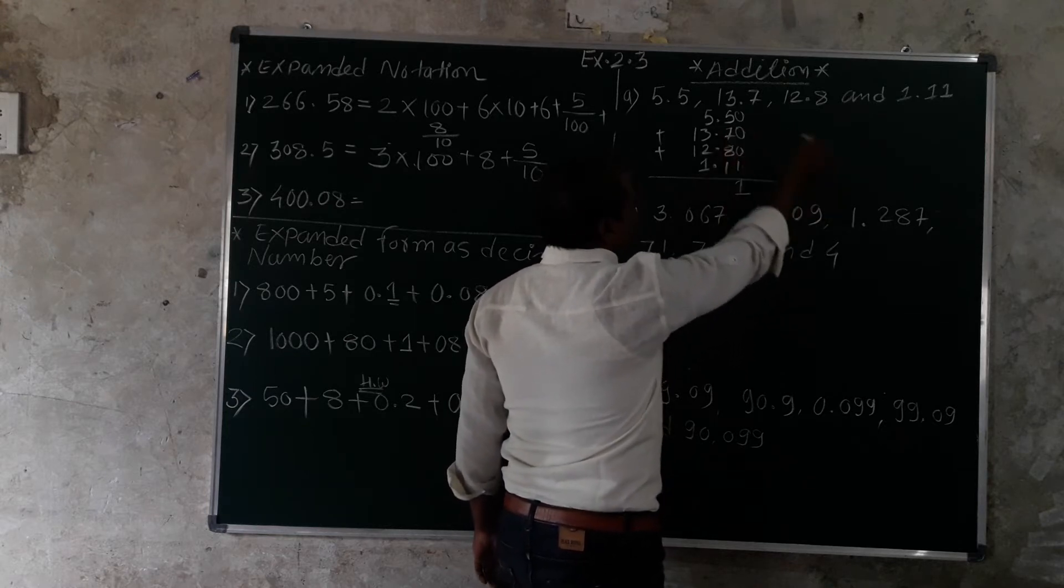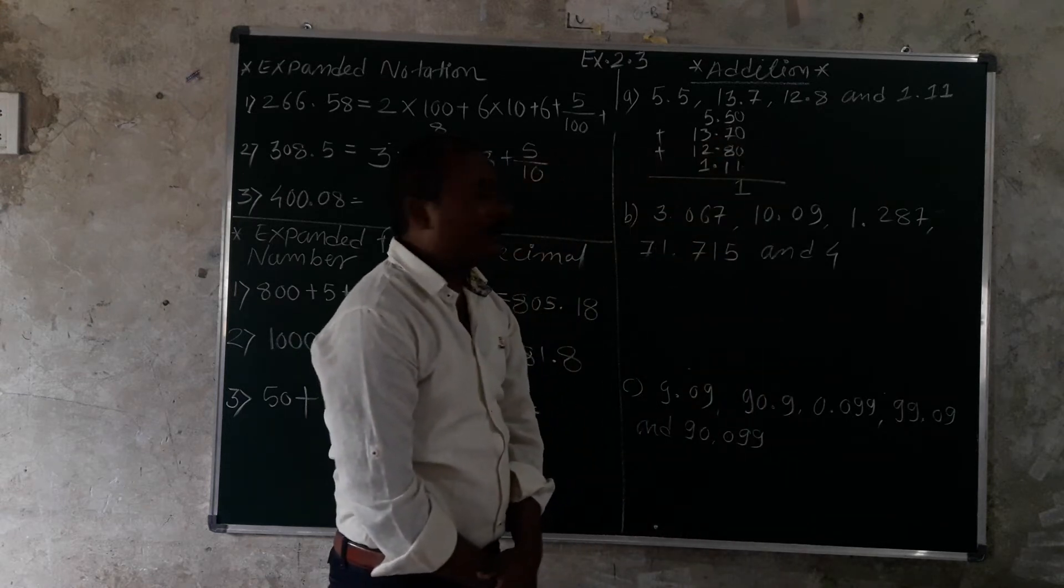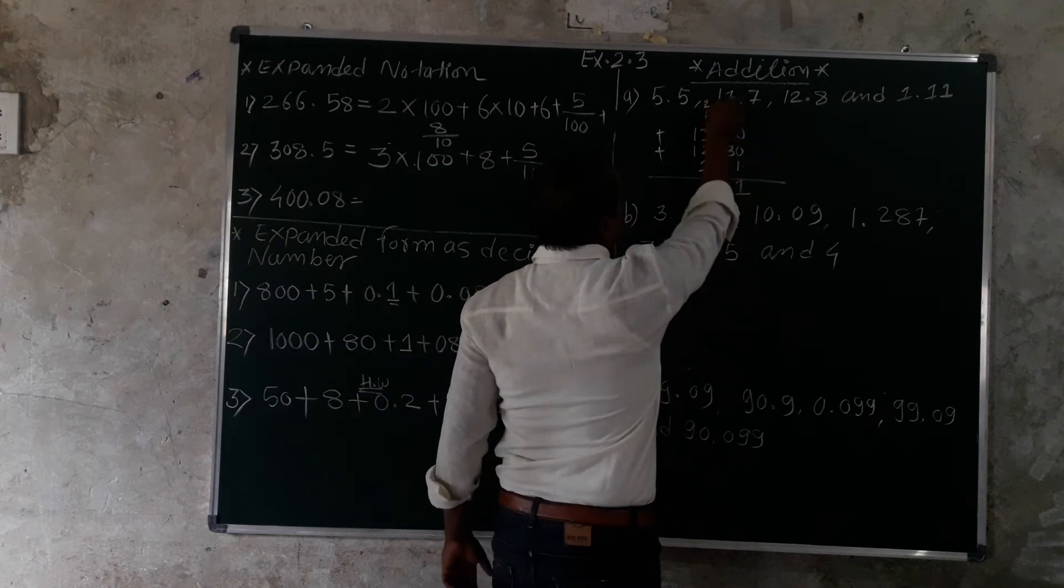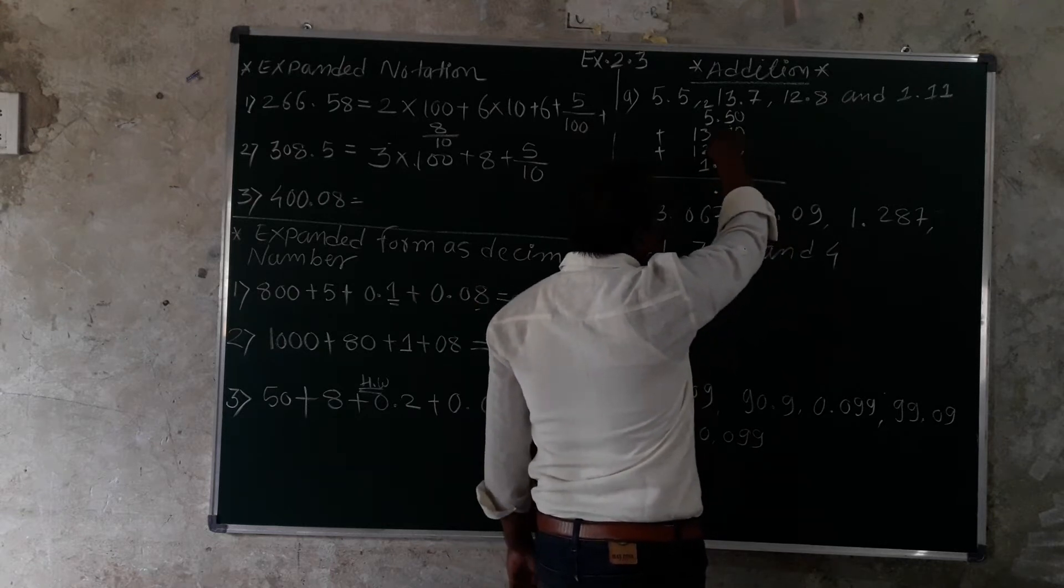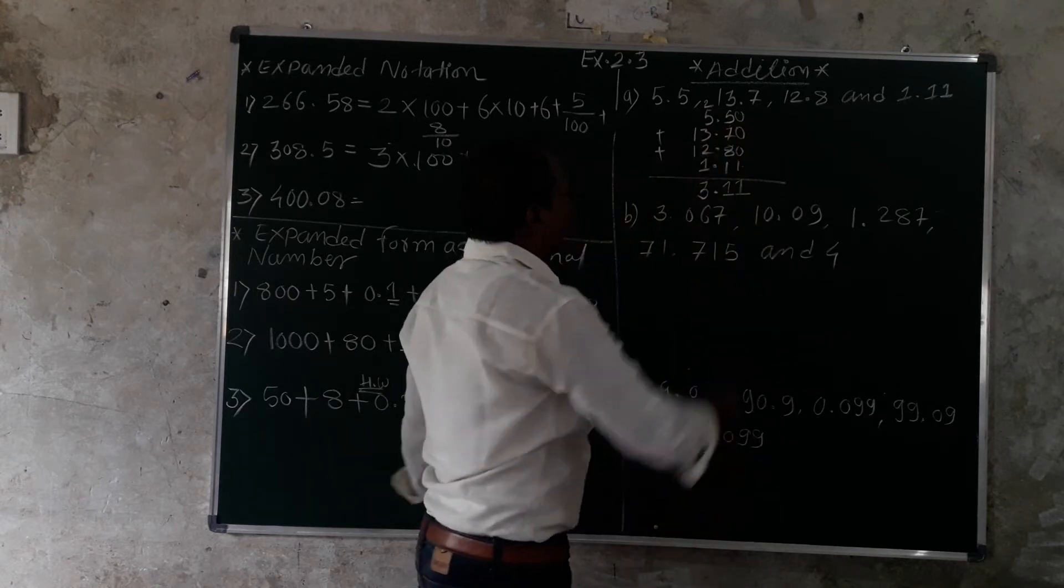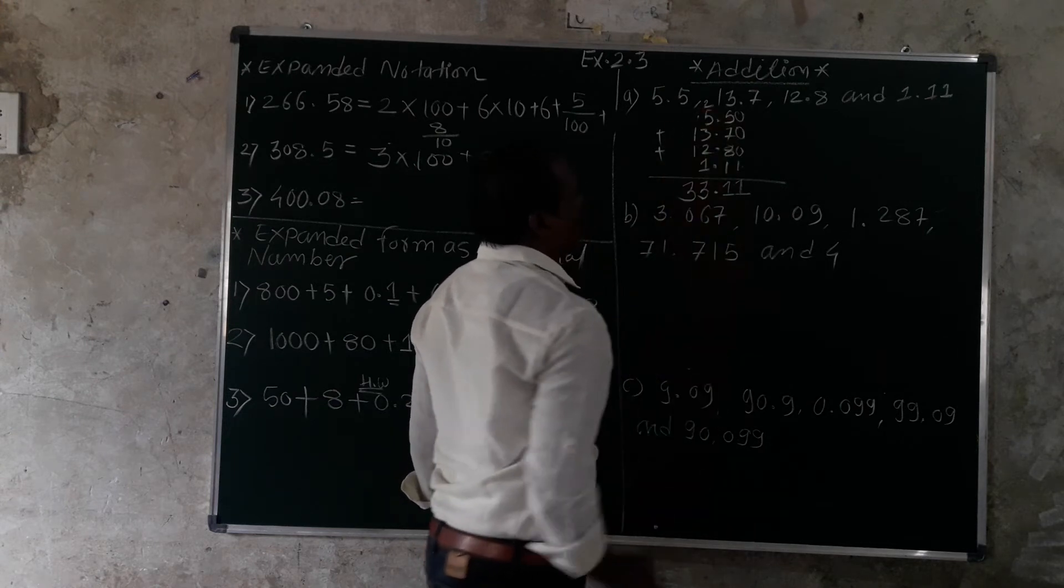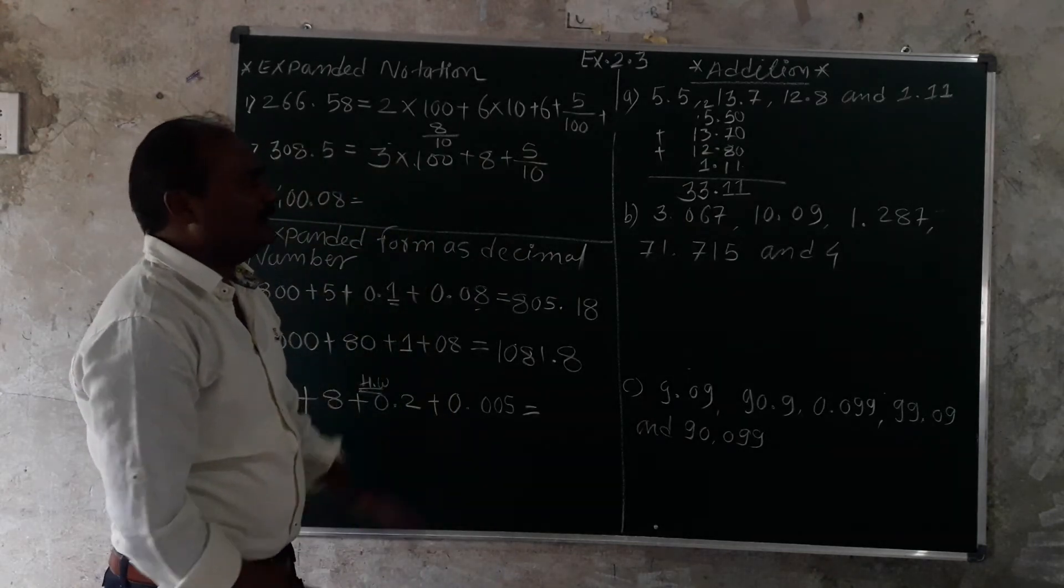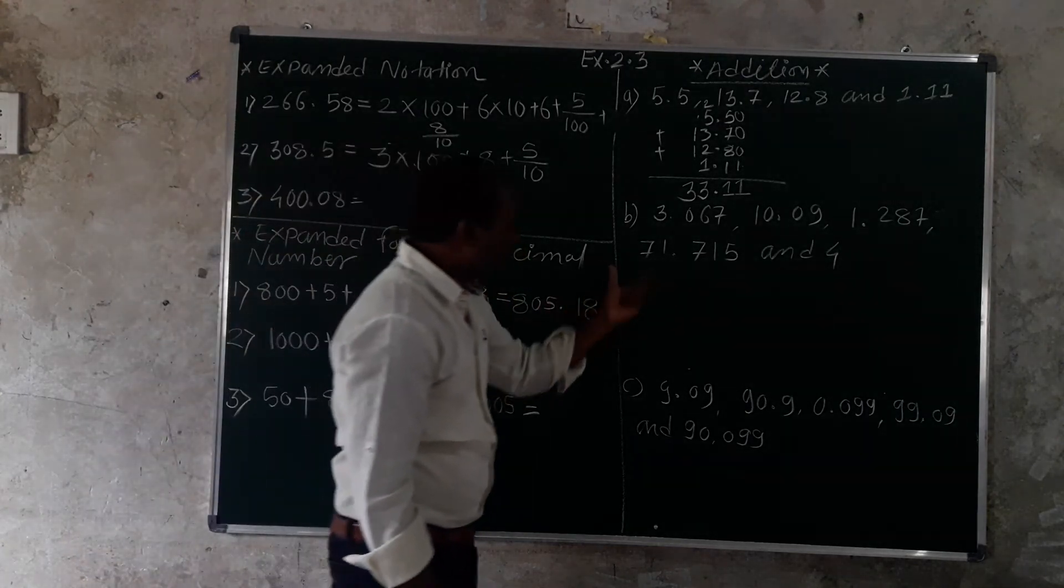5 plus 7 plus 8 plus 1 plus 1 equals 22. Write 2, carry 2. Then 1 plus 2 equals 3, plus 3 equals 6, plus 5 equals 11, plus 2 equals 13. Write 3, carry 1. The point goes here. Then 1 plus 1 plus 1 equals 3. The total is 33.11. This is how you do addition of decimal numbers.